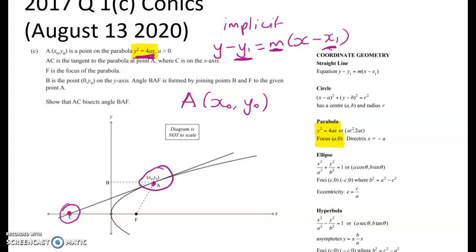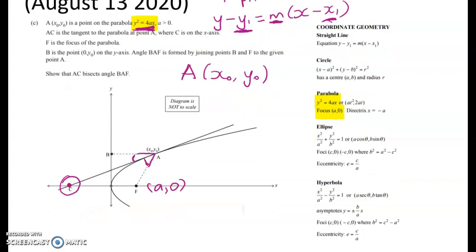F is the focus of the parabola, so F is here and the coordinates of F are (a, 0). B is the point here on the y-axis, and angle BAF is formed by joining up points B and F. So angle BAF is this whole angle here. We have to show that that tangent line bisects angle BAF. What we're trying to show is that this angle here and this angle here are equal.